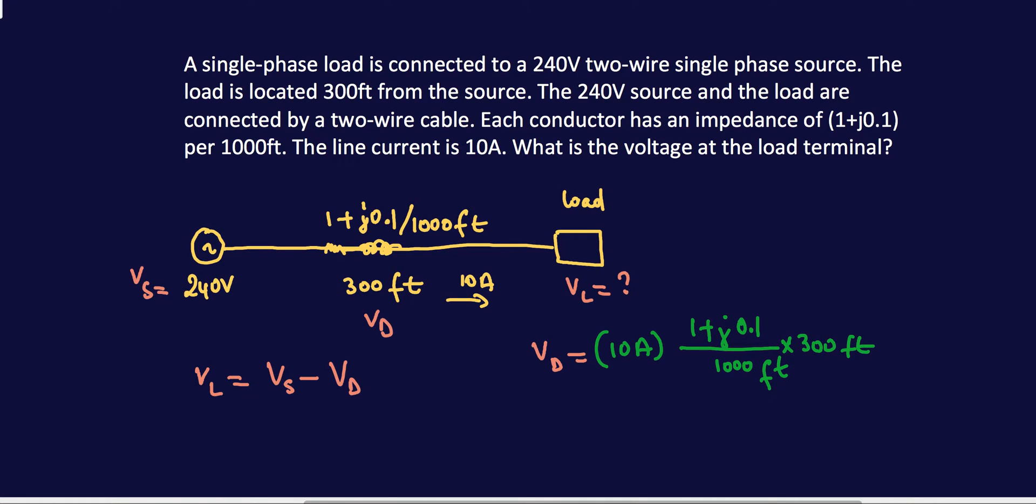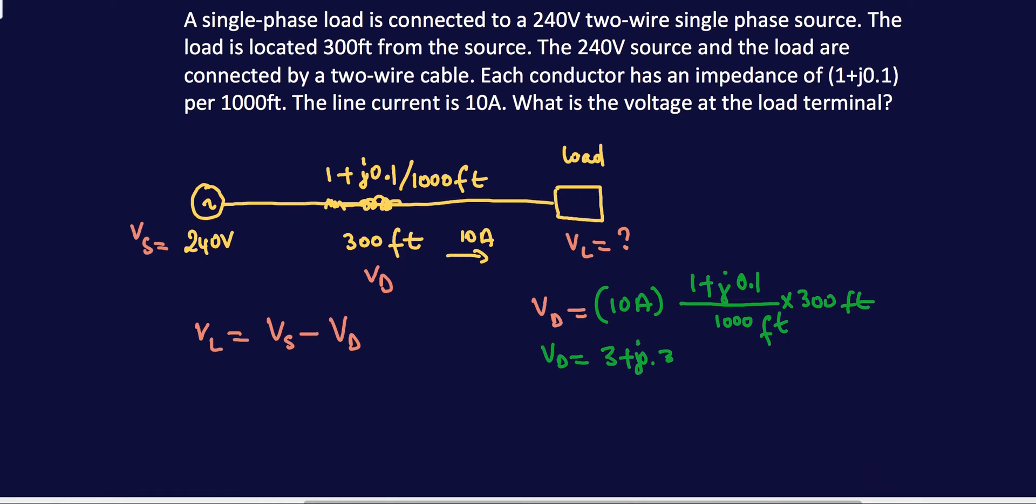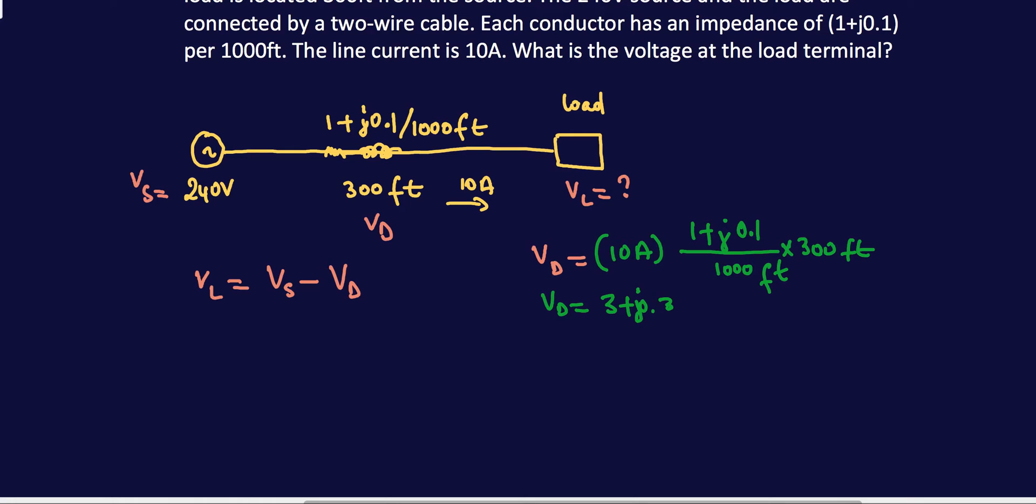So if you do the math here, you'll have Vd is equal to 3+j0.3. So then your voltage is equal to 3 if you convert it and then take the magnitude. Don't worry about the angle. In this case, single phase, so we got a 3 volt voltage drop across here.